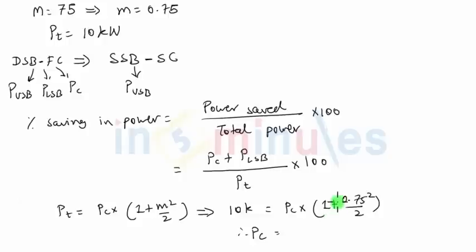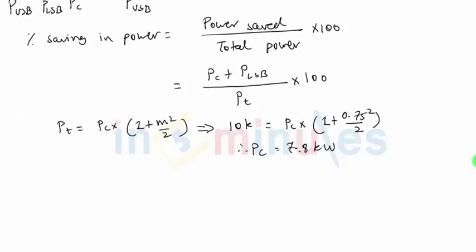After that, we all know that total power in sideband is always total signal power minus the carrier power, because that's what you have apart from the carrier in the signal. Total power is 10K minus 7.8K carrier power. This gives you total sideband power equal to 2.2 kilowatts.